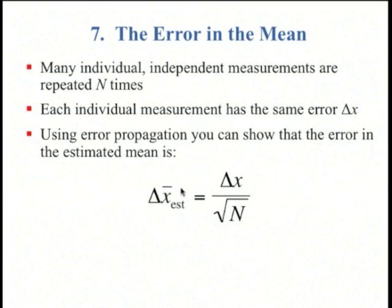So if n is large, then the error in the mean is less than the error of any individual measurement. In fact, this is why we take multiple measurements of the same thing, because we want to reduce our error. If we measure something once, we'll get some error delta x. If we measure it 100 times and take the mean, then we can reduce our error by a factor of 10.